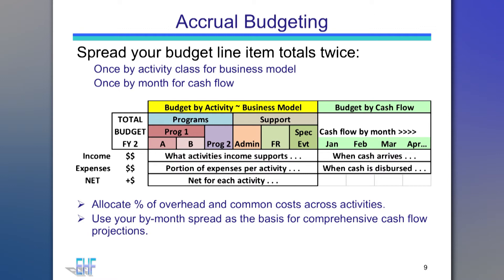Accrual accounting does not mean you should abandon concern for cash. Inflows and outflows by month should be estimated in an accrual budget and used to create cash flow projections for operations. You will want to spread the budget totals twice — once for the activities for your business model and once by month for your cash flow. For a comprehensive cash flow projection, you will need to add other non-operation changes in cash, for example capital purchases, your fixed assets, payments of loan principal or prior period payables, receipt of prior period receivables, and use and replenishment of your line of credit or operating reserve funds.